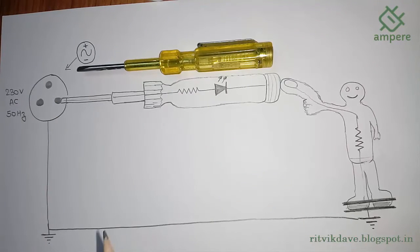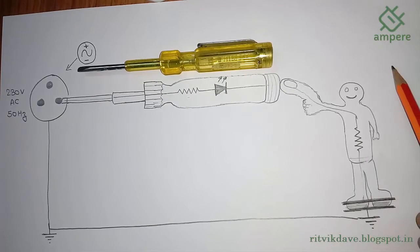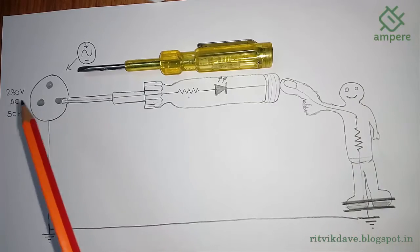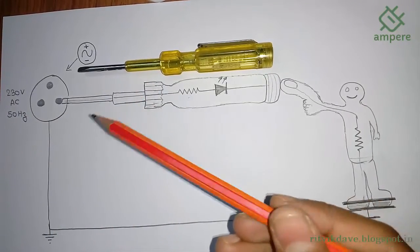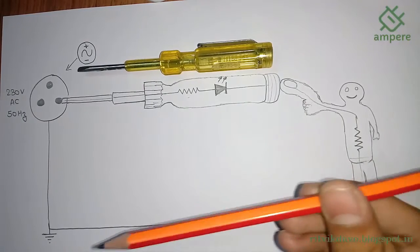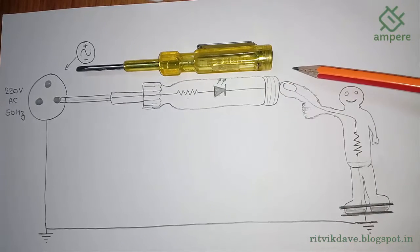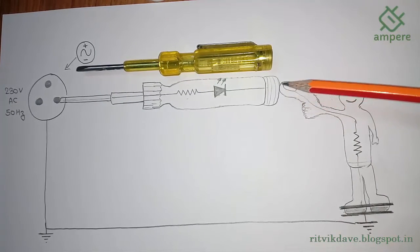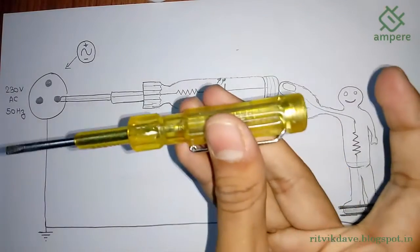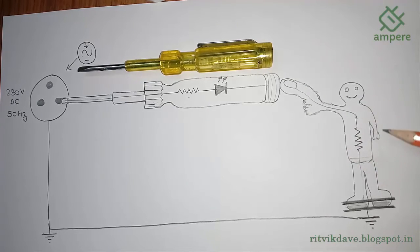Actually, it looks like this: this is the current limiting resistor, this is the neon lamp, and this is a human being. When we test any socket to see if voltage is there or not, we need to plug the screwdriver into the socket and touch the metallic contact with our finger. This metallic contact on the screwdriver needs to be held while plugging into the socket. This represents the user's or human being's impedance.